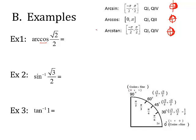Arc cosine of square root of 2 over 2: I know arc cosine means I choose from quadrants 1 and 2. It's positive, so it comes from quadrant 1. I'm looking for the angle theta that has a cosine of positive square root of 2 over 2 in quadrant 1. Using the unit circle, that angle is at pi over 4. That is my answer.